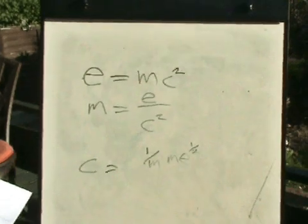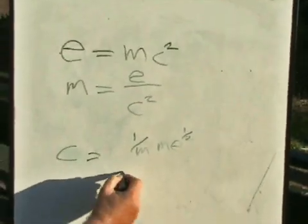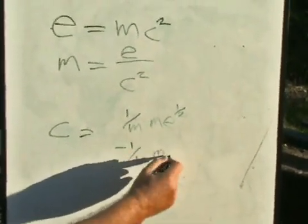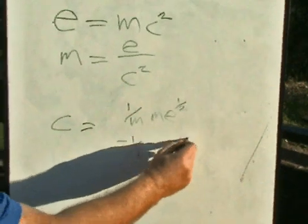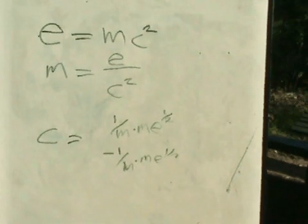But that isn't the only solution for c. There are in fact two solutions for c, the other being minus one over m times m times energy raised to the power of a half. Let's just put the dots in there for multiply.